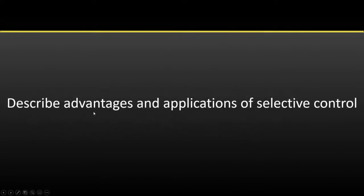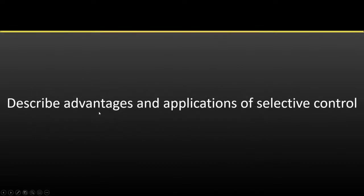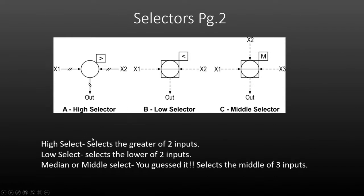First objective: describing advantages and applications. Here we have some selectors — the three main ones discussed in this ILM. A high select relay, indicated by the symbol with the greater than sign, will select the greater of two inputs.